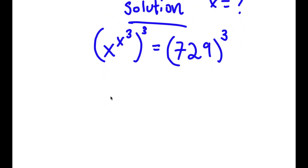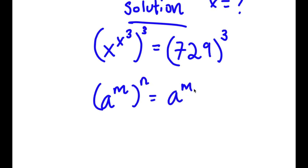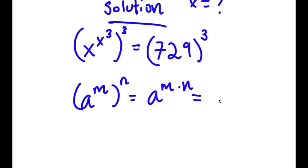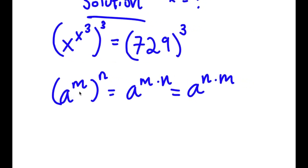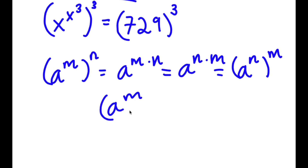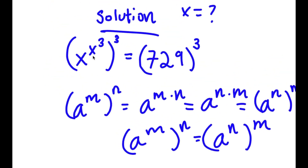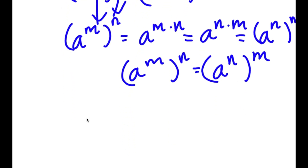Now if I have something in the form a to the power of m to the power of n, this equals a to the power of m times n. And since m times n equals n times m, this means a to the power of m to the power of n equals a to the power of n to the power of m. So x to the power of x to the power of 3 to the power of 3 becomes x to the power of 3 to the power of x to the power of 3.